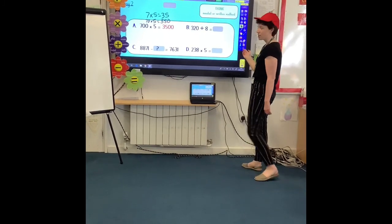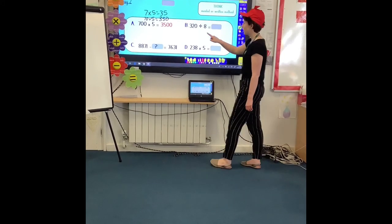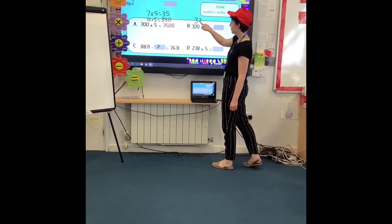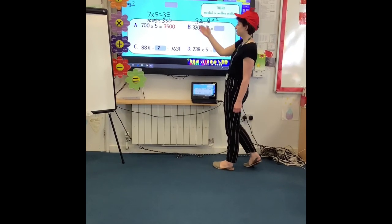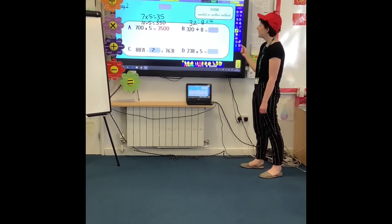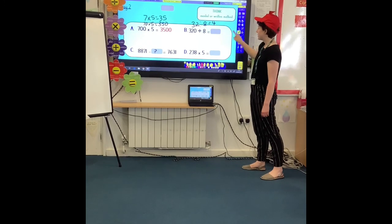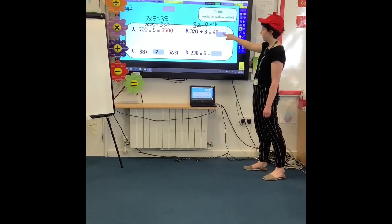B, again, another one I would have done mentally. So I would have used my knowledge of 32 divided by eight, which equals four. Plus 320 is simply 10 times bigger. My answer is going to be 10 times bigger. So my answer is 40.